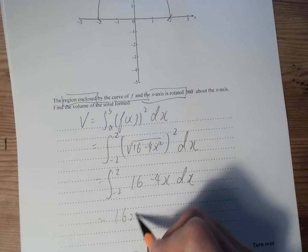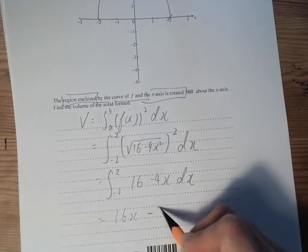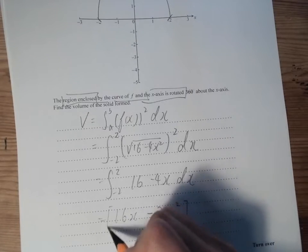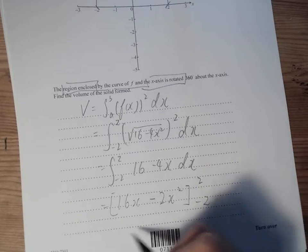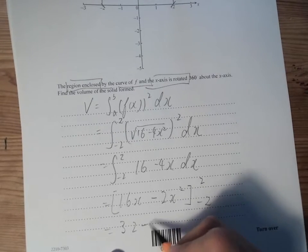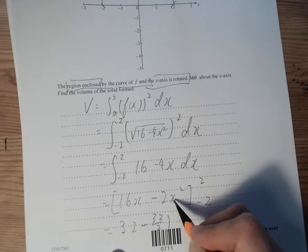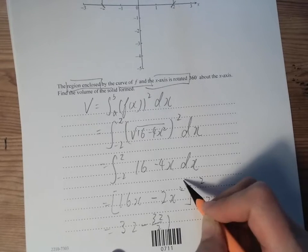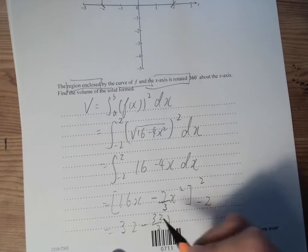So we have 16x minus the antiderivative of x squared, substituting 2 and -2. We just need to substitute these values. So it's 32 minus 32 over... oh sorry, this should be over 3 there. I missed that out.